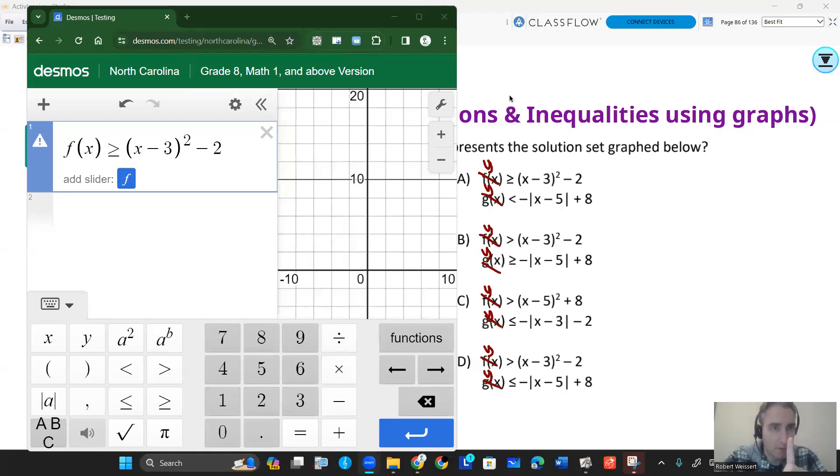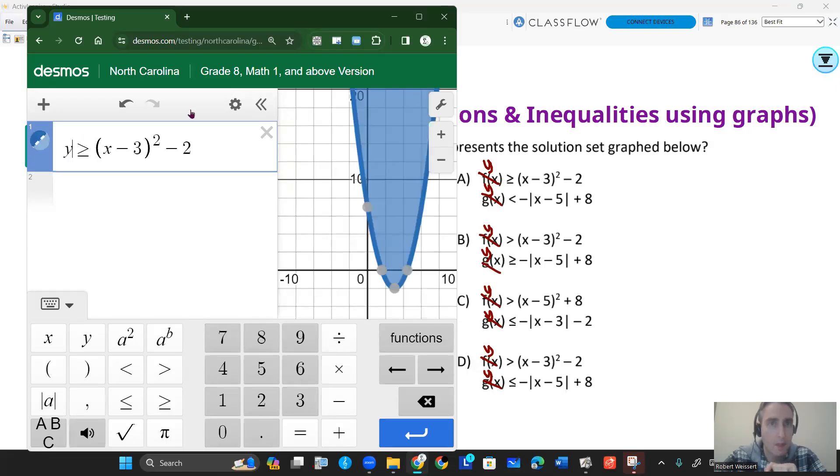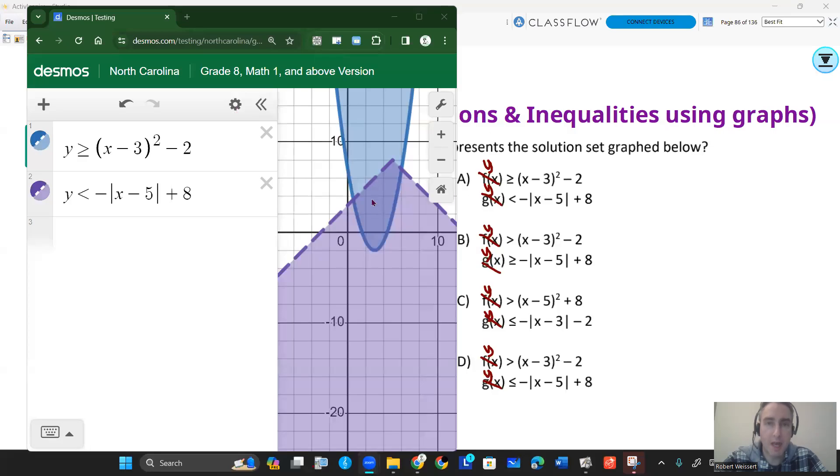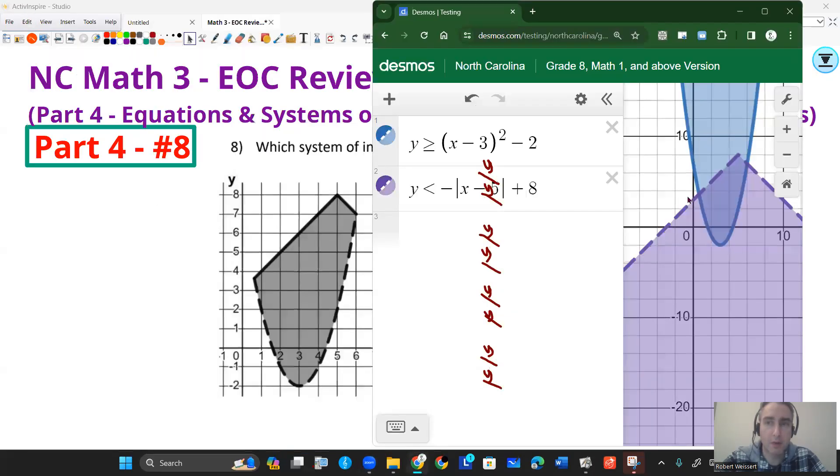So take a moment to graph your inequality systems and find the one that actually works. Again, remember, you cannot use f(x) when you're typing these. So you've got to use y. Here's graph choice A. My overlapped region is here, which is similar to this, but notice where the shading is. This is a solid line versus this is being a dotted line, and this is dotted and solid. So it looks like my inequalities are switched, so A is not going to work.